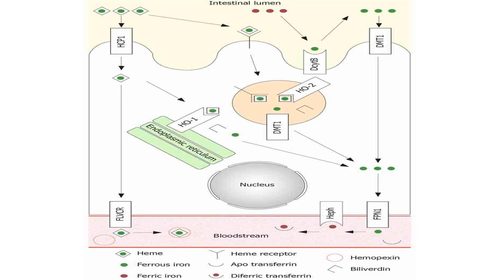The first step of iron absorption is complete once iron enters the intestinal cells. Here, iron has a choice: it can pass into the portal circulation if the body needs it, or be stored inside the intestinal cells if the body does not need it. Iron stored in the intestinal cells can later be transmitted to the portal circulation when needed, or it is lost with the shedding of the intestinal cells — meaning iron is not fully absorbed.